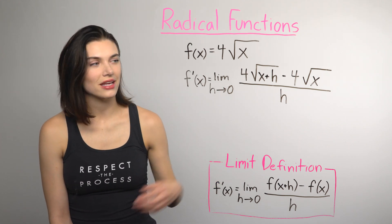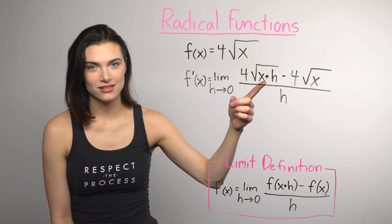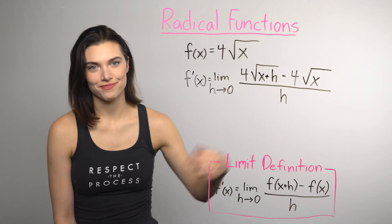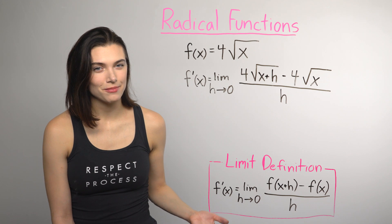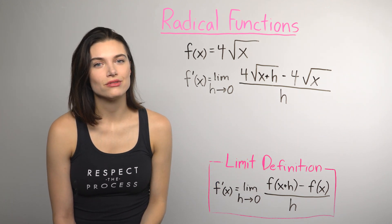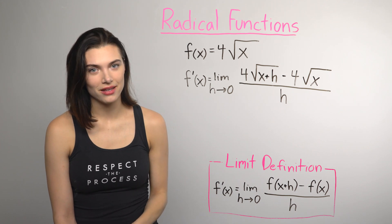So I substituted in x plus h for x, subtracted off the original function, and divided it all by h. Now we have to figure out a way to simplify this when there are these square roots. The trick to try when you see a radical is multiplying by the conjugate.